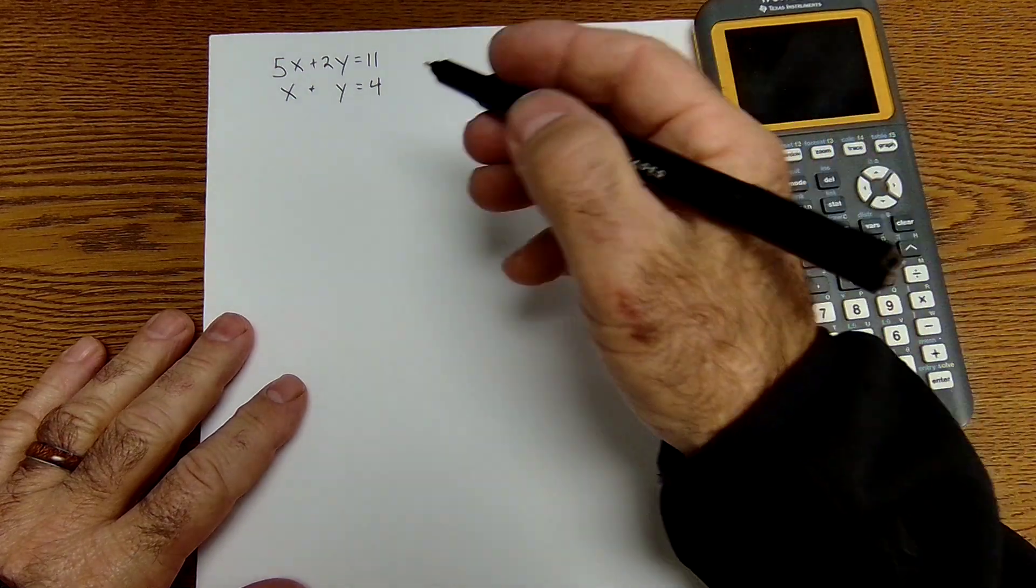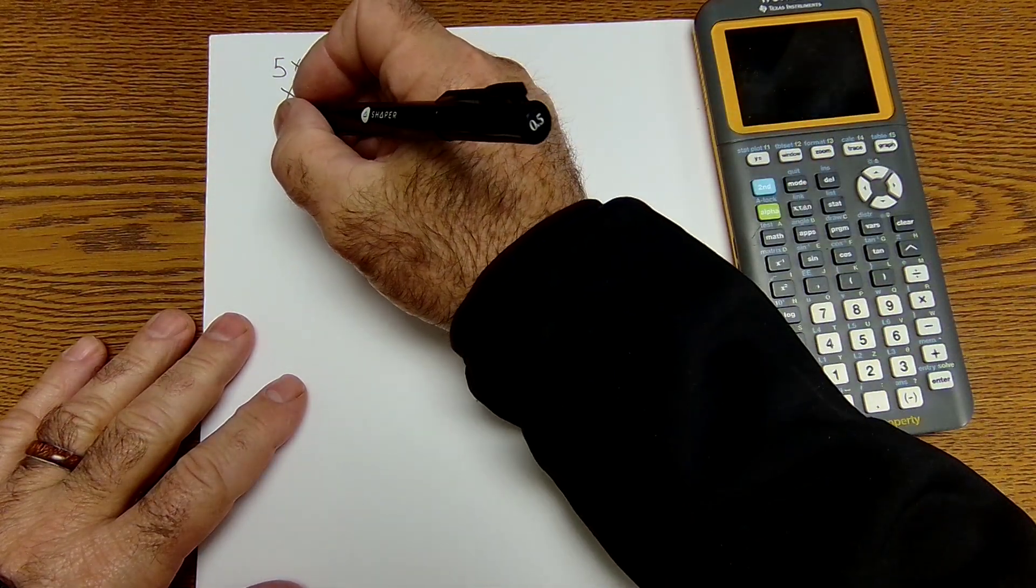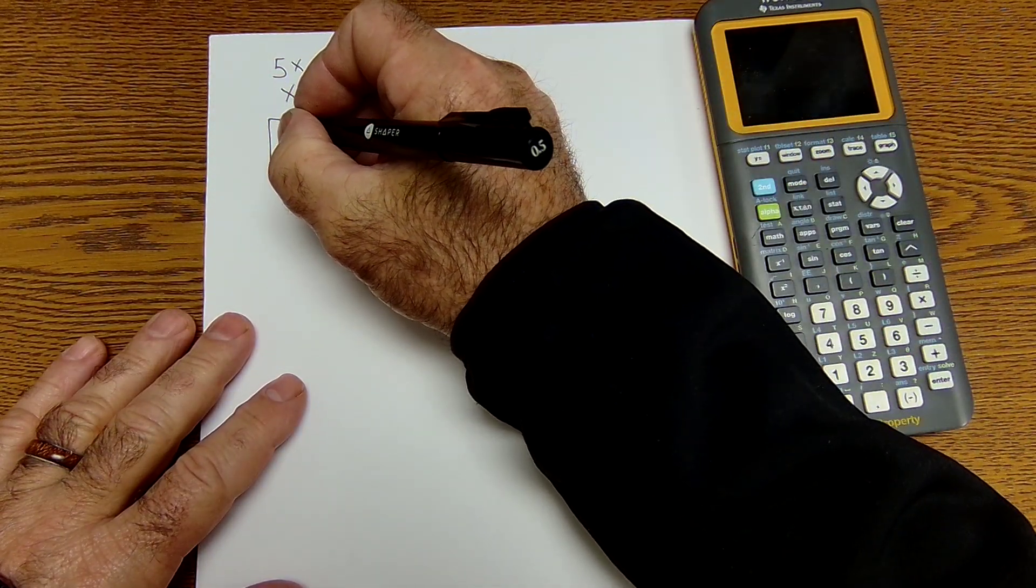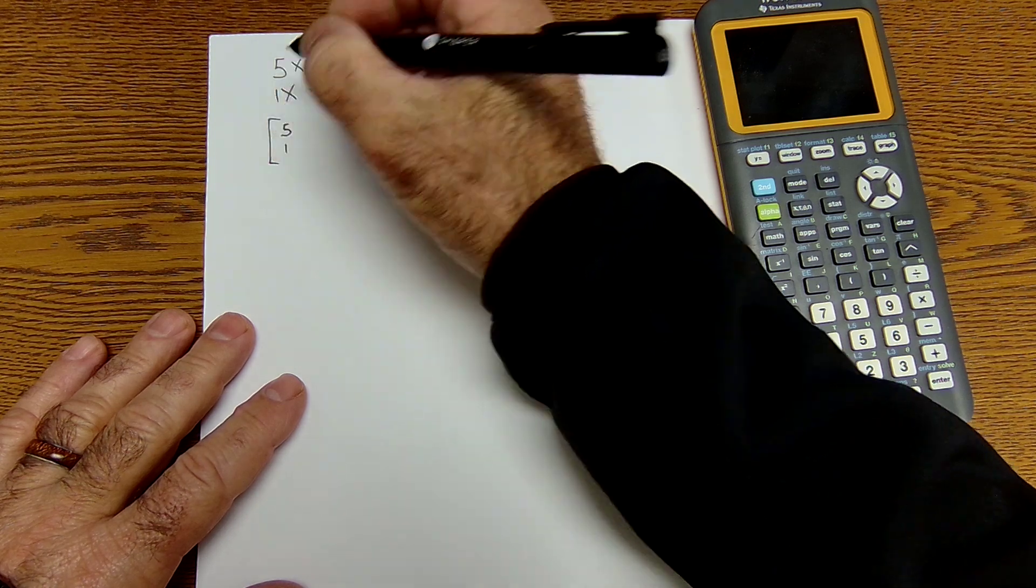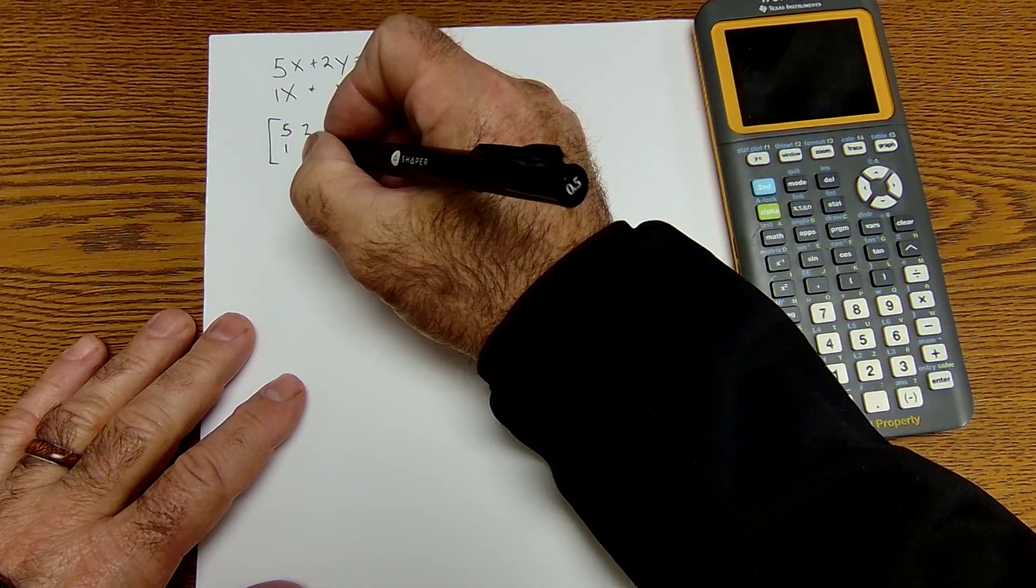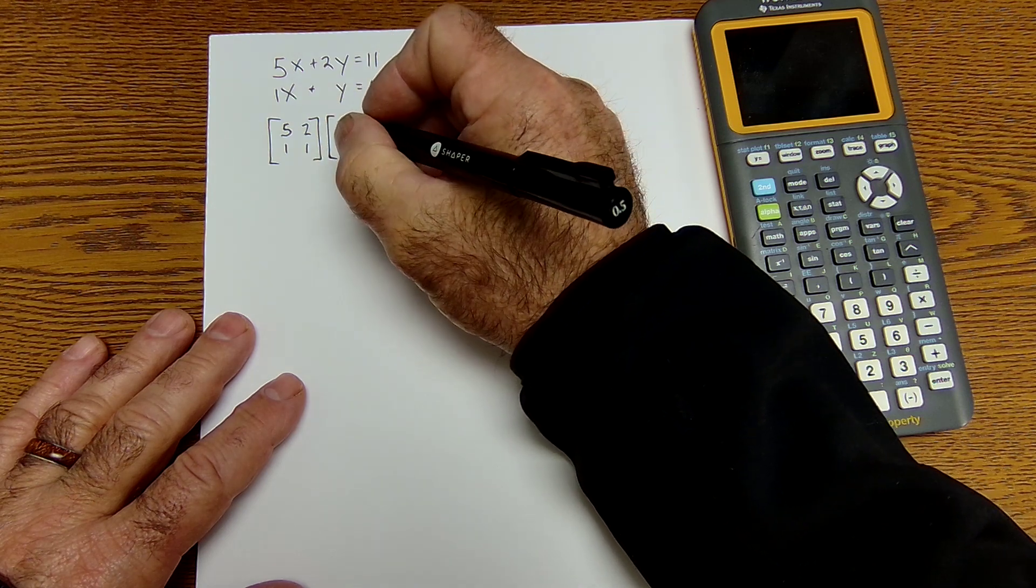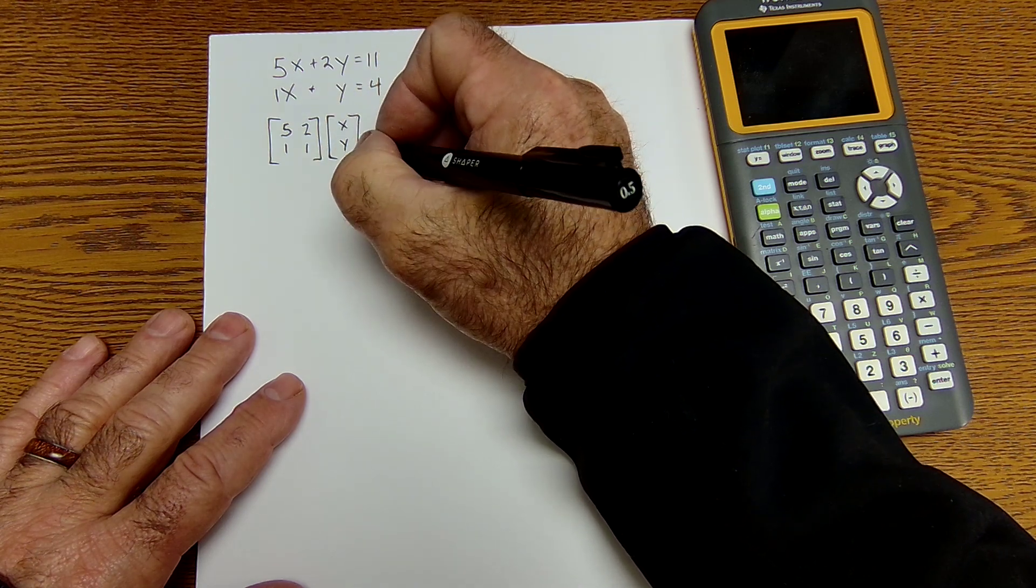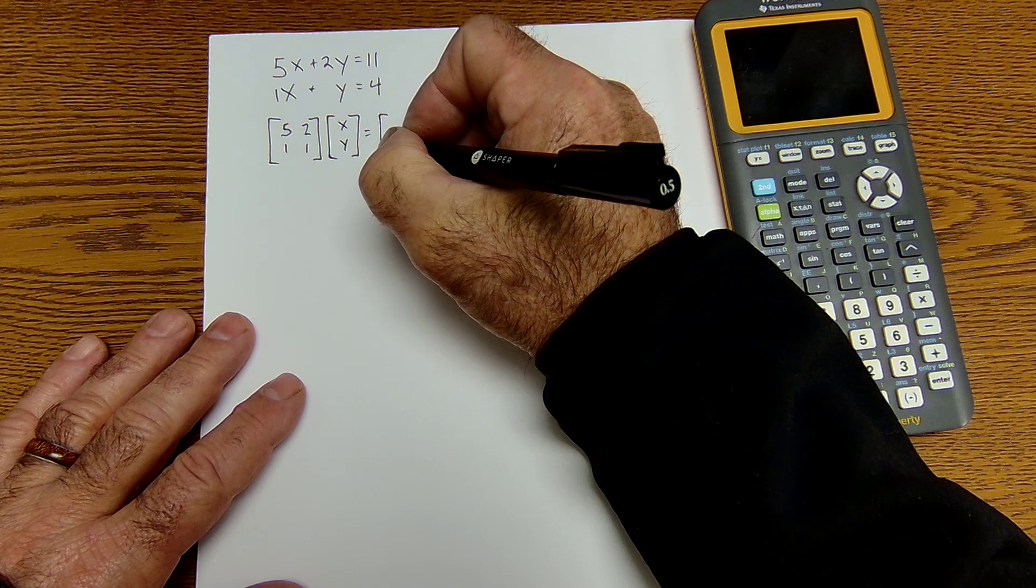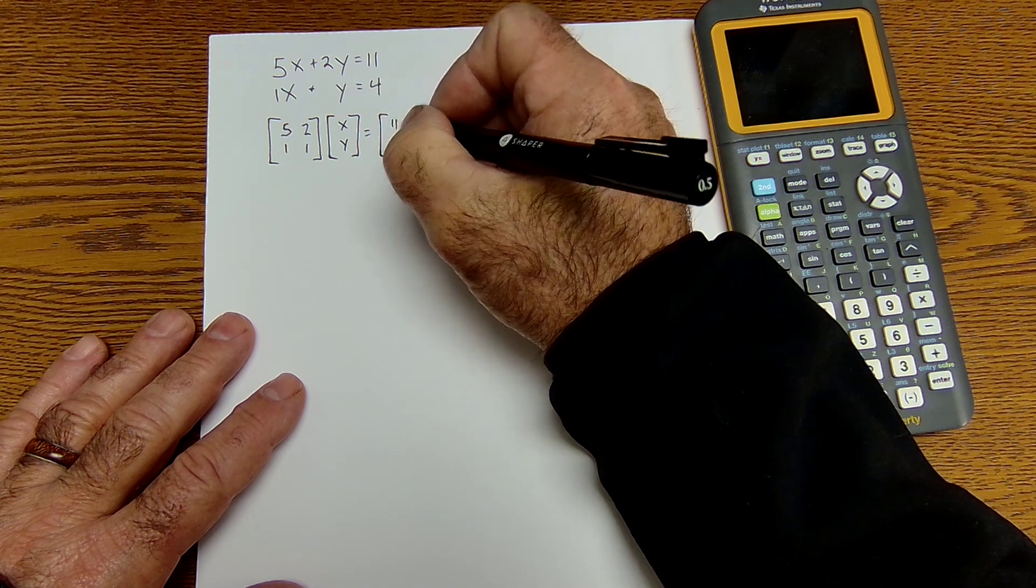I have two equations with two variables here. I'm going to create a matrix that contains the coefficients 5 and 1, 2 and 1, multiply it by the variable matrix XY and set that equal to a solution matrix 11, 4.